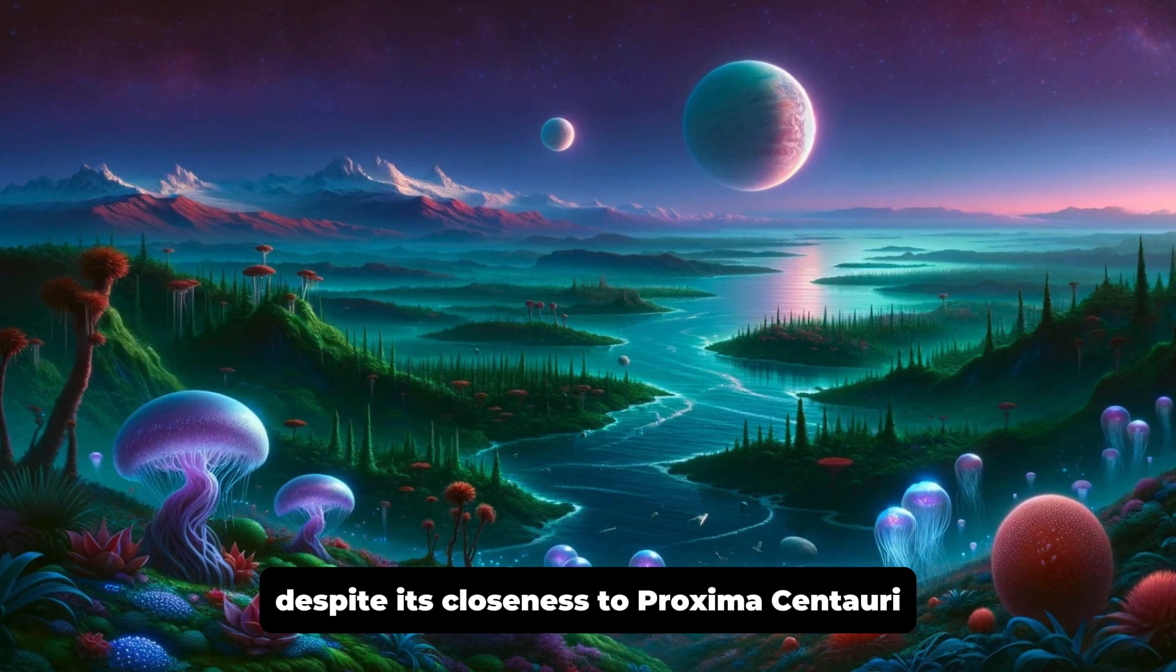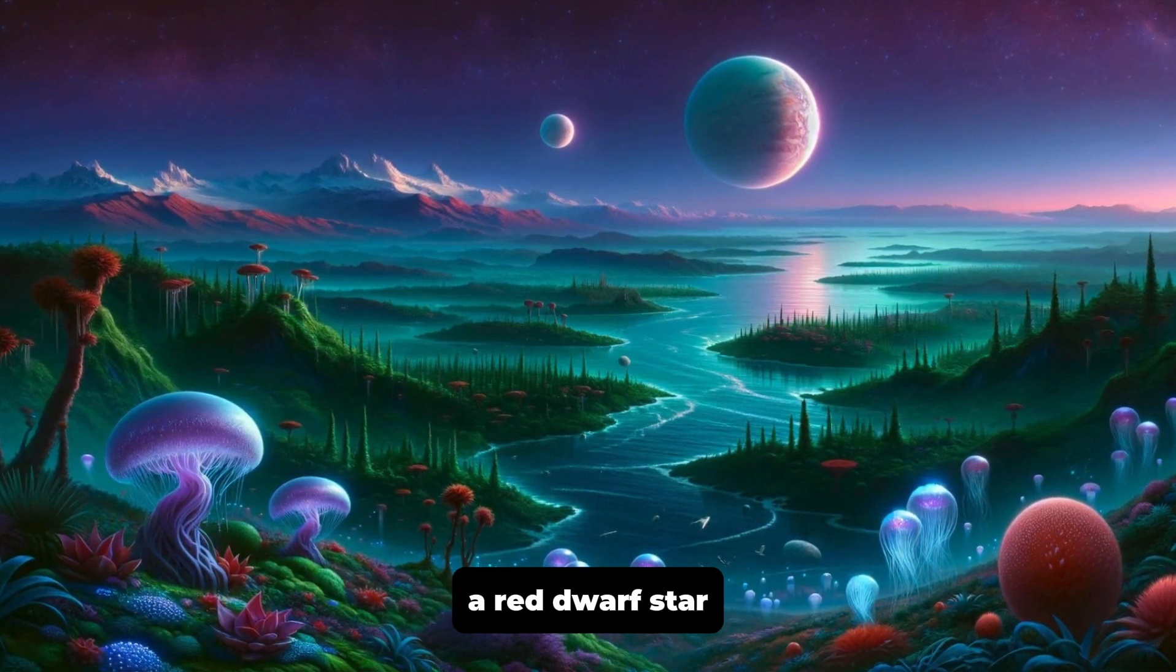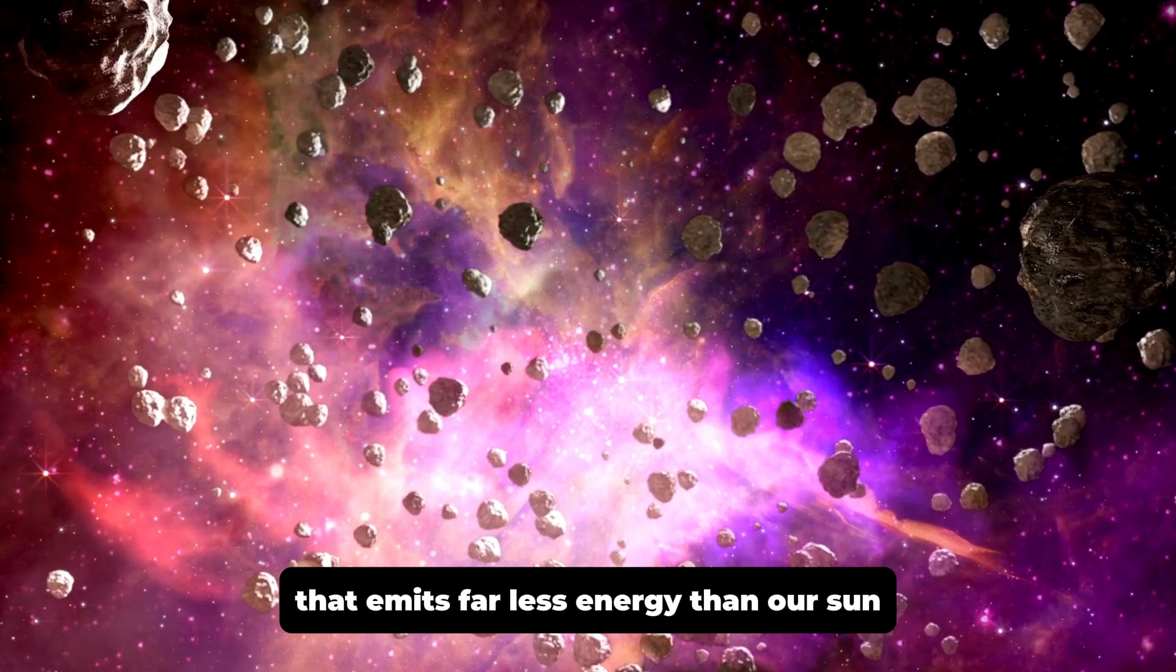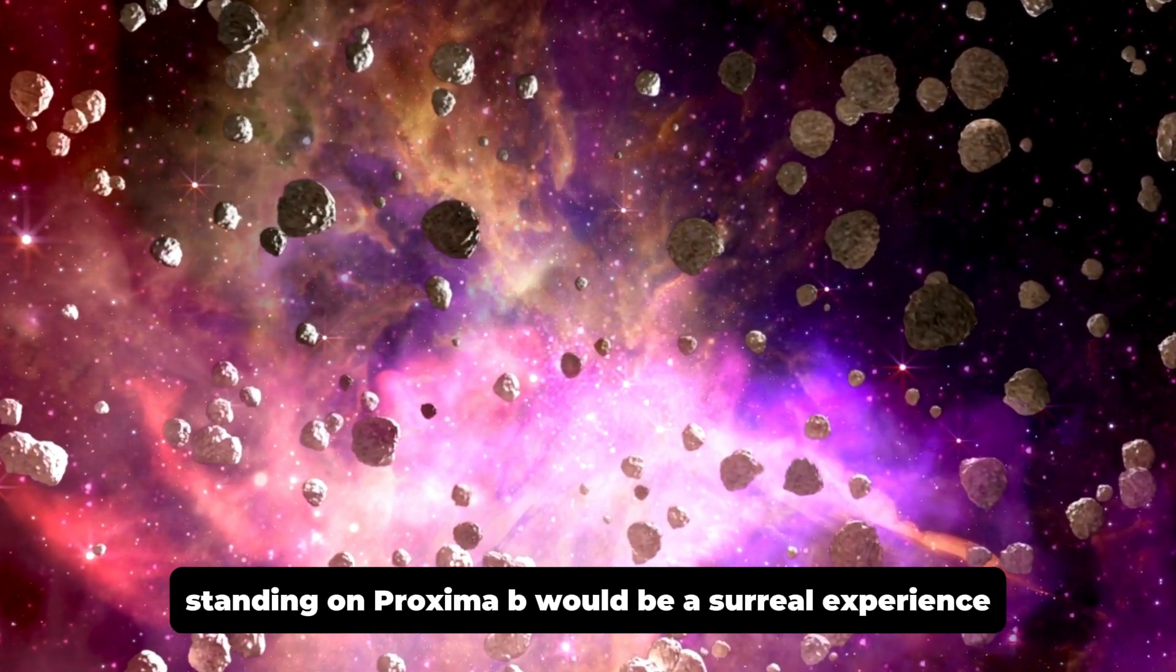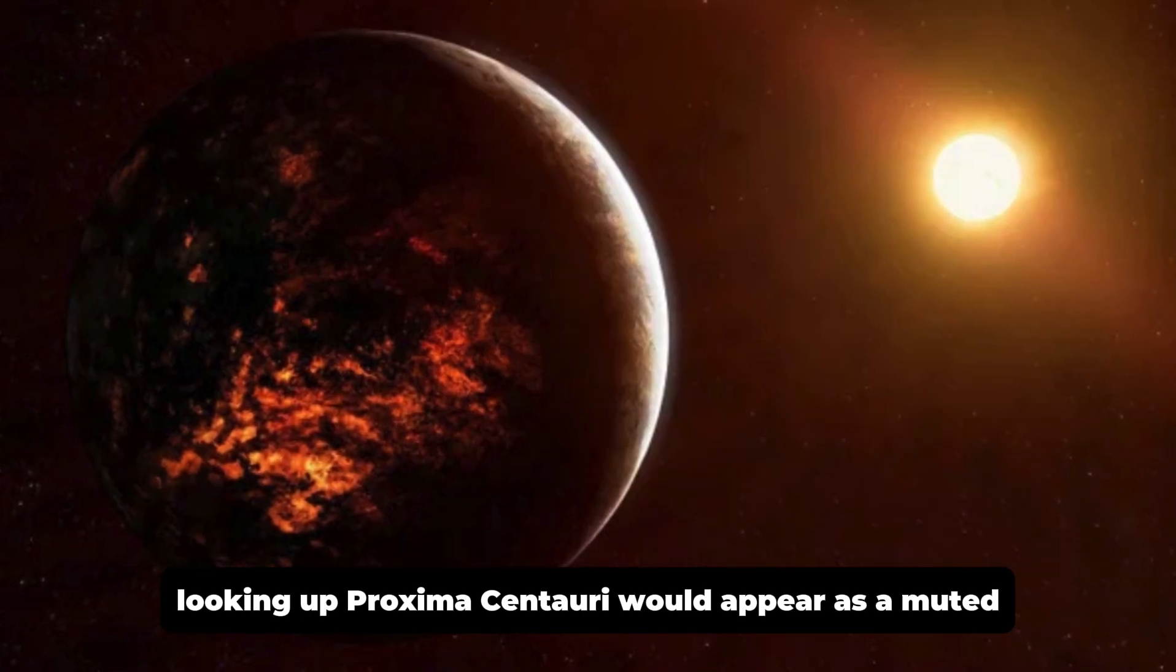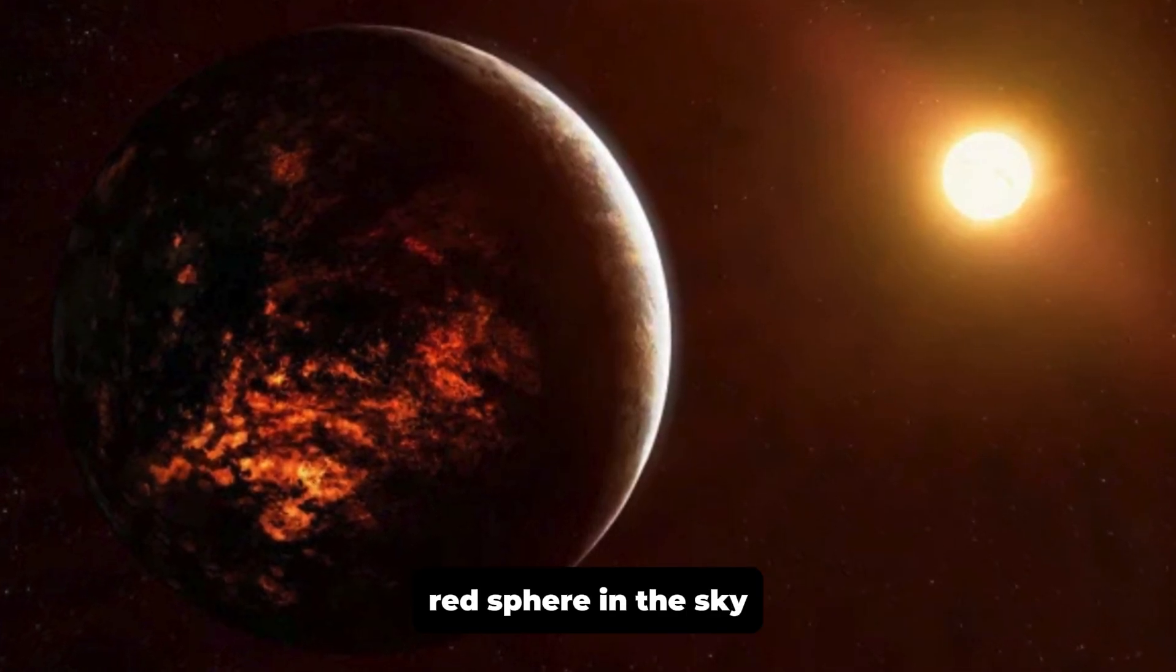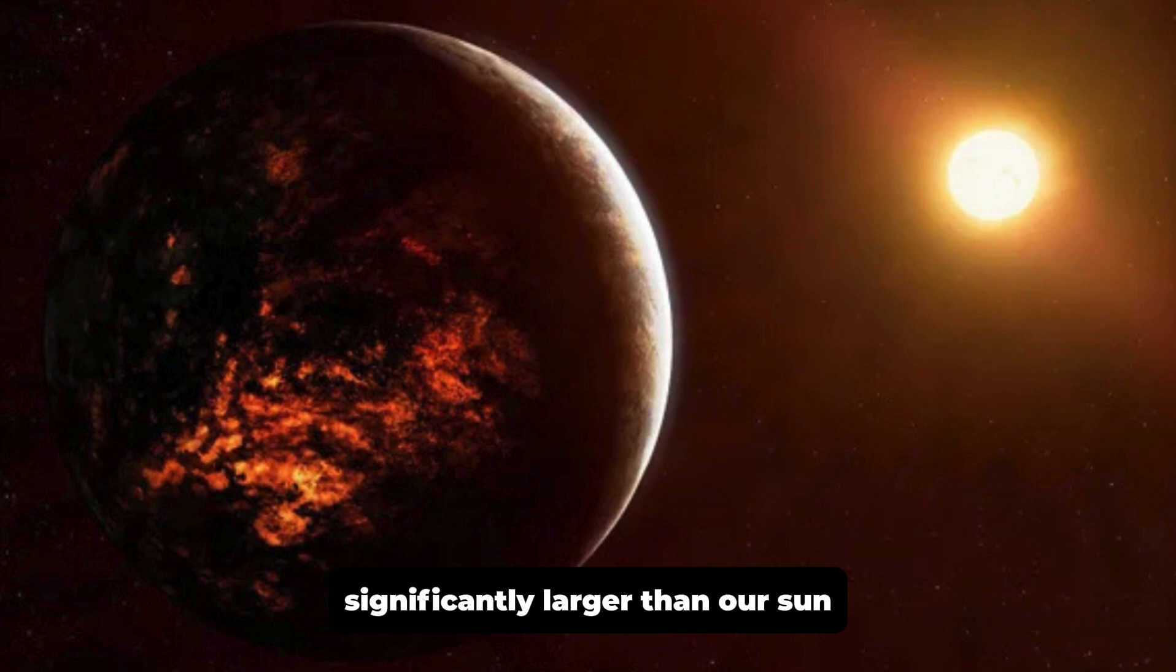The environment of Proxima B. Despite its closeness to Proxima Centauri, a red dwarf star that emits far less energy than our Sun, standing on Proxima B would be a surreal experience. Looking up, Proxima Centauri would appear as a muted red sphere in the sky, significantly larger than our Sun.